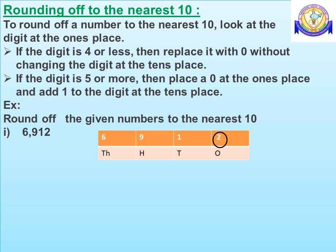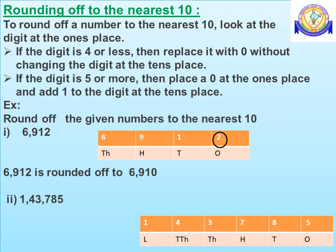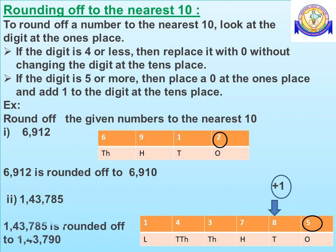Replace 2 with 0 without changing the digit at the 10's place. Therefore, 6,912 is rounded off to 6,910. Consider one more number 1,43,785. Here the digit at the 1's place is 5. Replace 5 with 0 and add 1 to the digit at the 10's place. Therefore, the number is rounded off to 1,43,790.